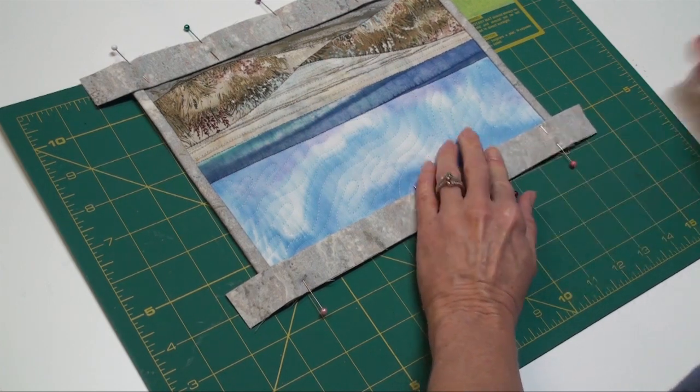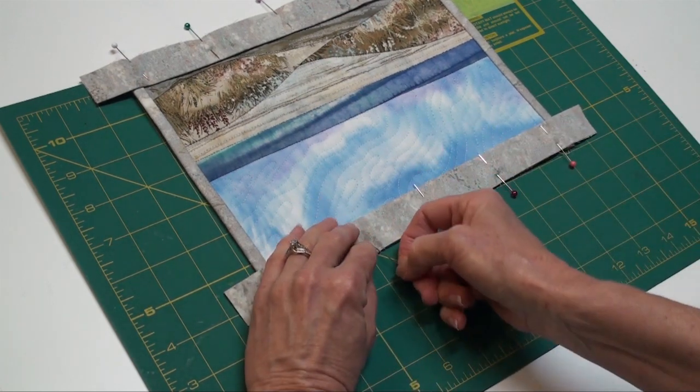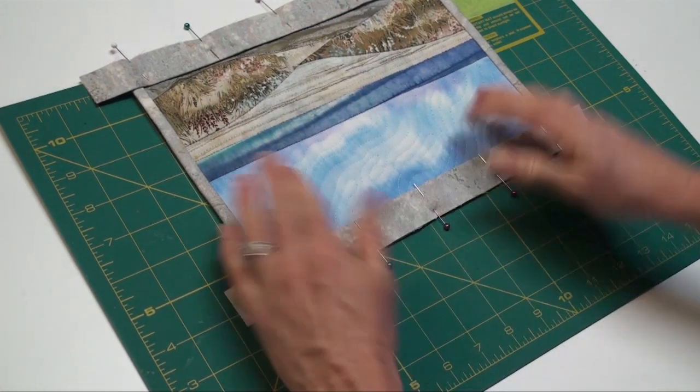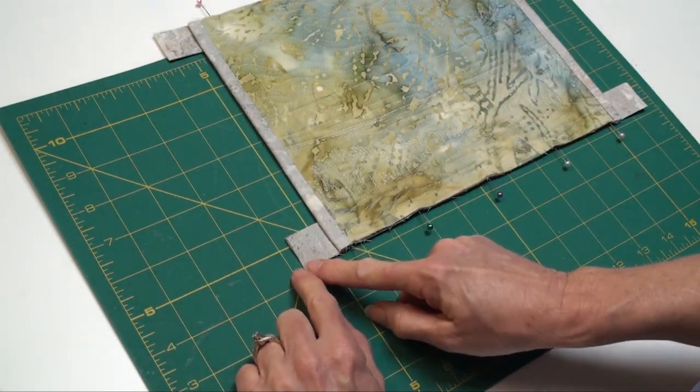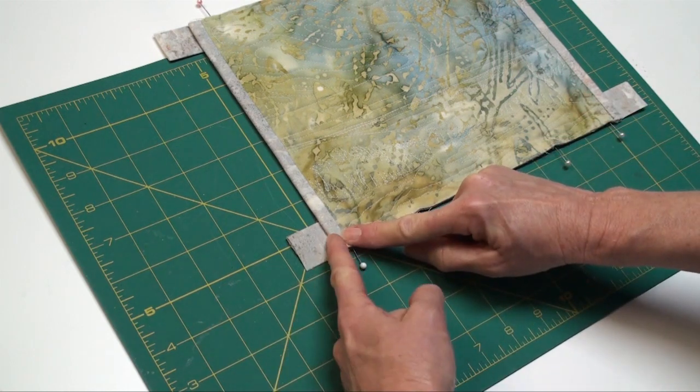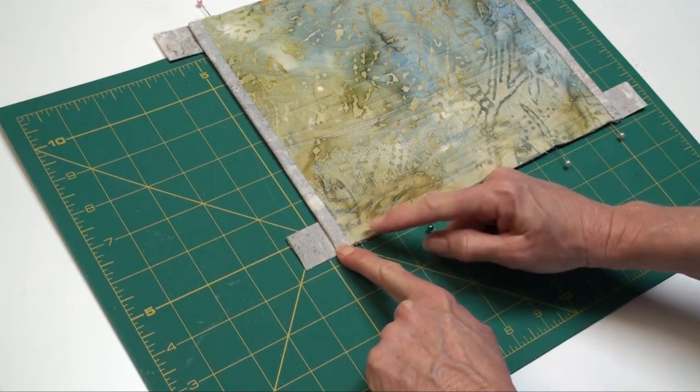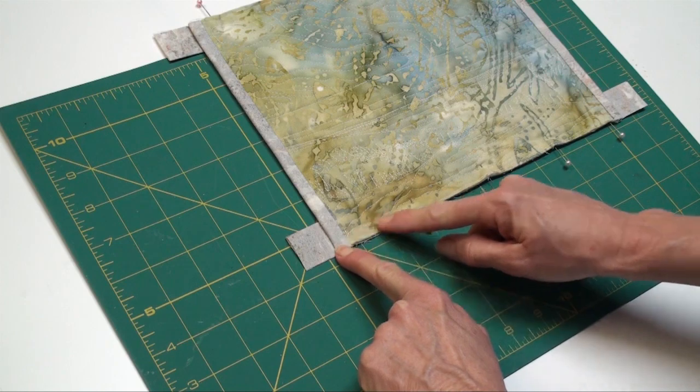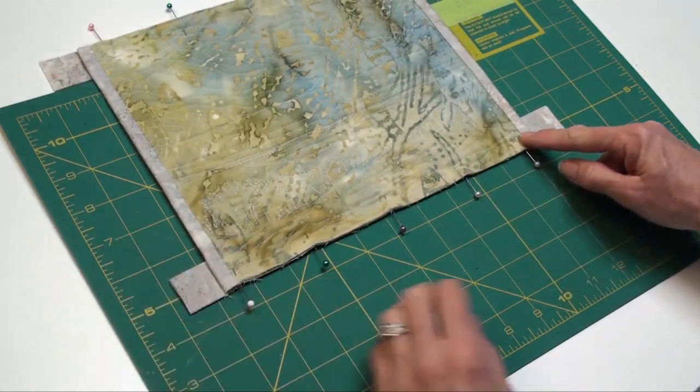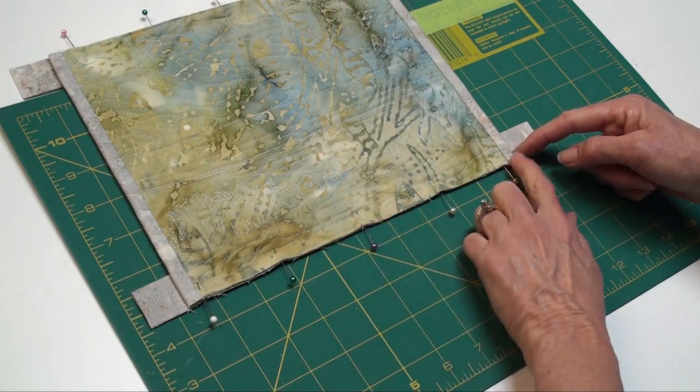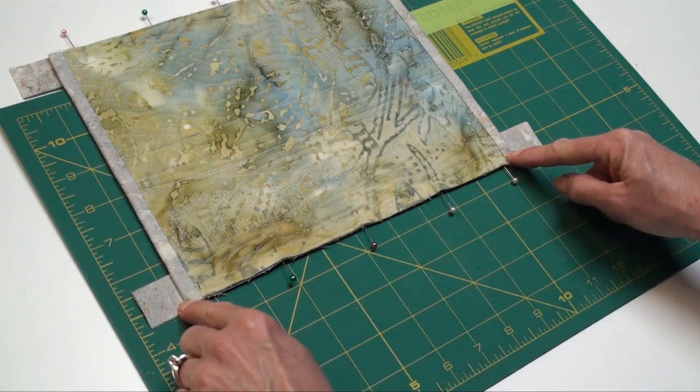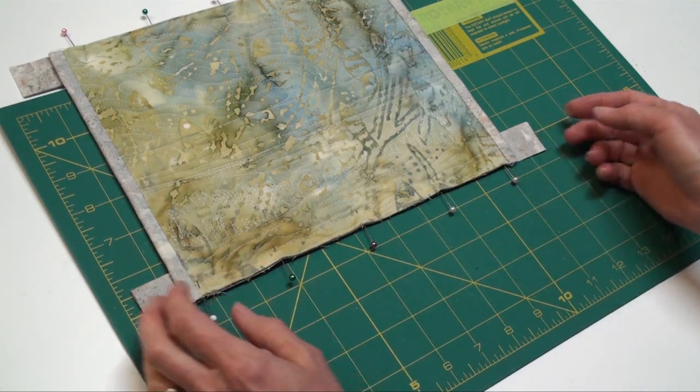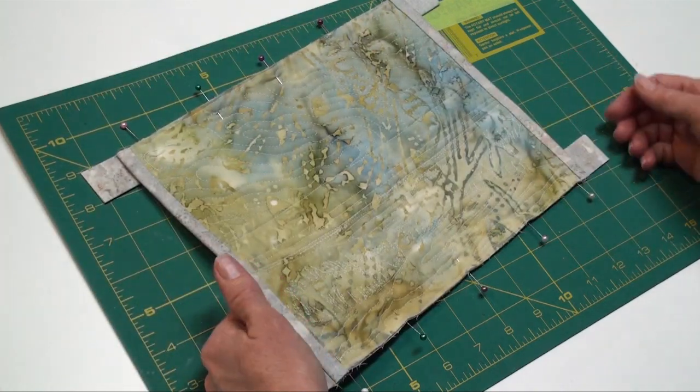Then once this is finished, I'm going to take it over to the sewing machine. When I take it to the sewing machine, rather than start out here and go across, I'm going to start right on the edge of the finished binding. Backstitch a little bit and stitch clear across to the other side. And again, stop at the edge of the finished binding rather than going all the way out. So I'll do that on this side and the other side. Meet you over there.